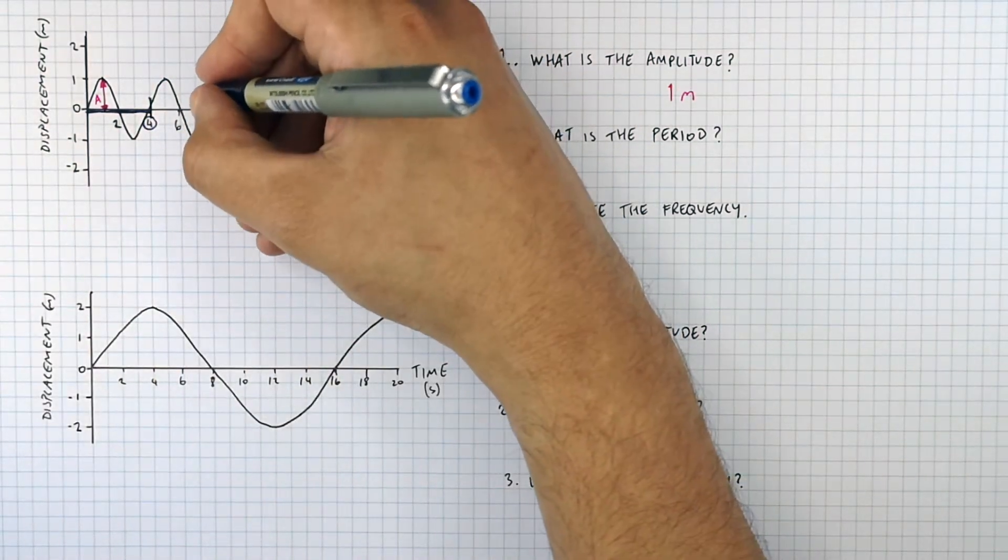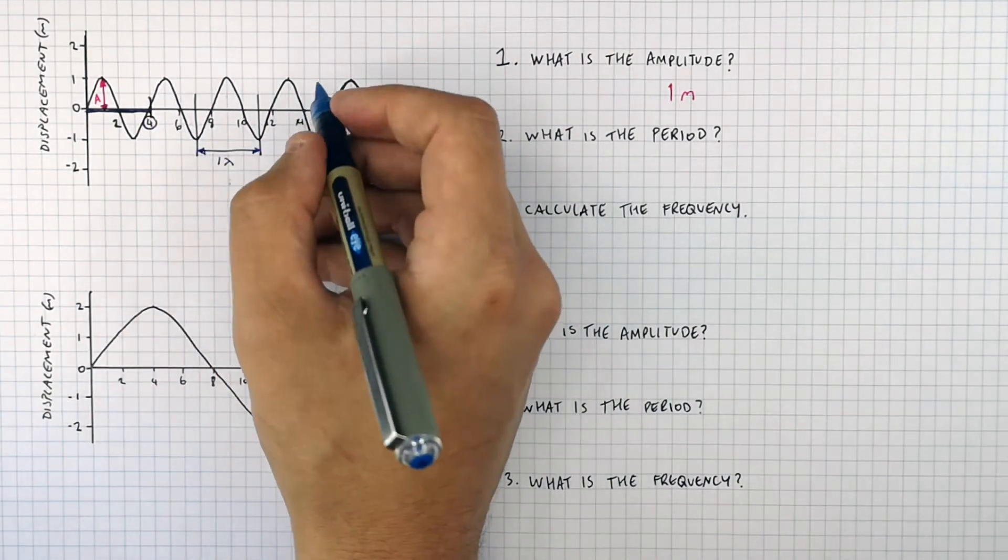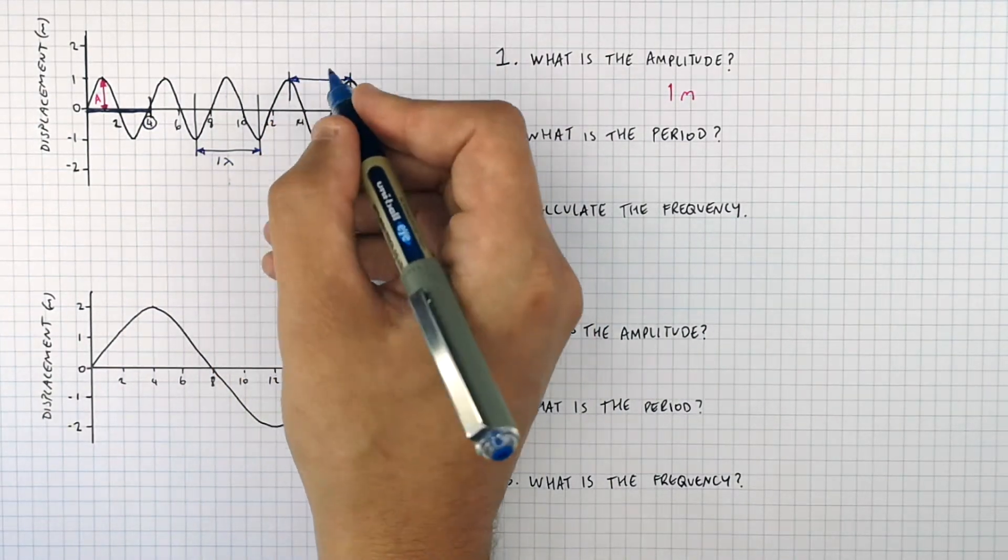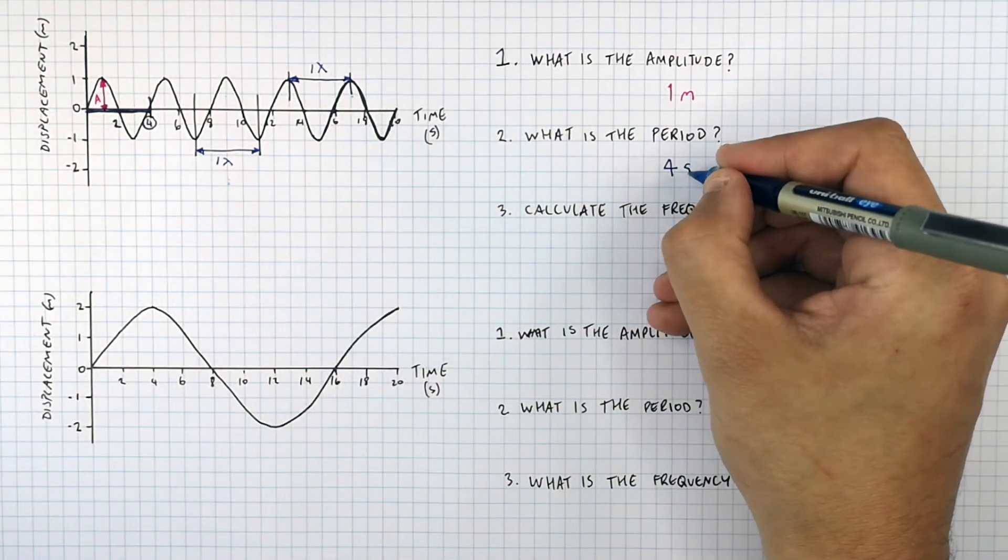And if you go from the trough of one wave to the next trough of the next wave, or the peak of one wave to the next equivalent peak on the next wave, they are both one wavelength. And as you can see here, the period is still four seconds.